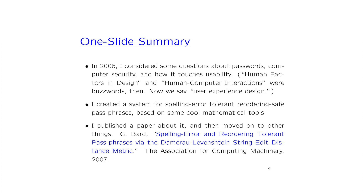I'd like to give a one-slide summary before I dive into the talk. In 2006, I was considering questions about passwords and computer security, particularly how it touches usability — human factors in design and human-computer interaction, now more fashionably called user experience design. I created a scheme for spelling-error-tolerant, reorder-tolerant passphrases based on some cool mathematical tools. Essentially, it's a password scheme where you're allowed to make spelling mistakes. I published a paper about it and moved on to other things.